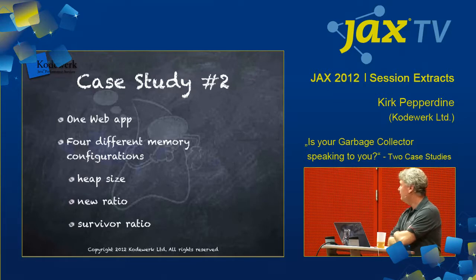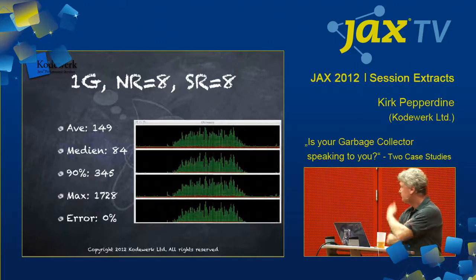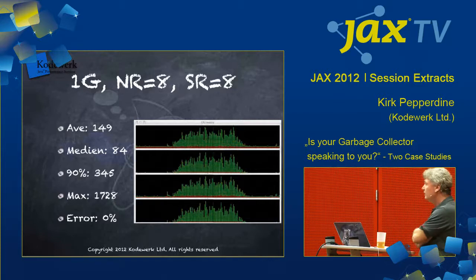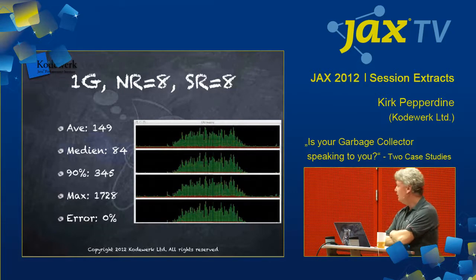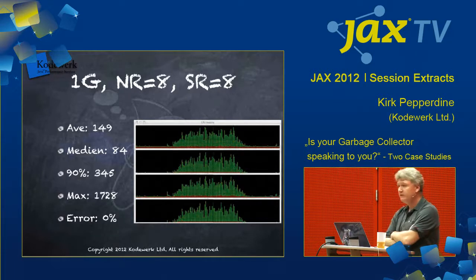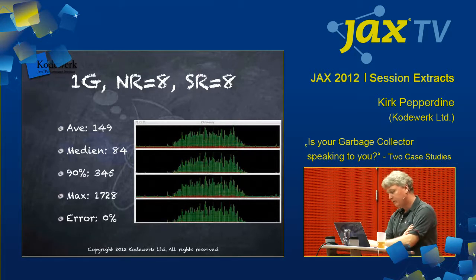Case study number two. We have one web app here with four different memory configurations. We're going to play around with heap size, new ratio, and survivor ratio, and we'll look at CPU profile again. In this case, we have one gig of heap, new ratio is eight, survivor ratio is eight — pretty much default settings. We can see that our average response time for each transaction is 149 milliseconds, median of 84 milliseconds, 90th percentile of 345 milliseconds, max is 1728 milliseconds, and the benchmark was running without producing any errors.